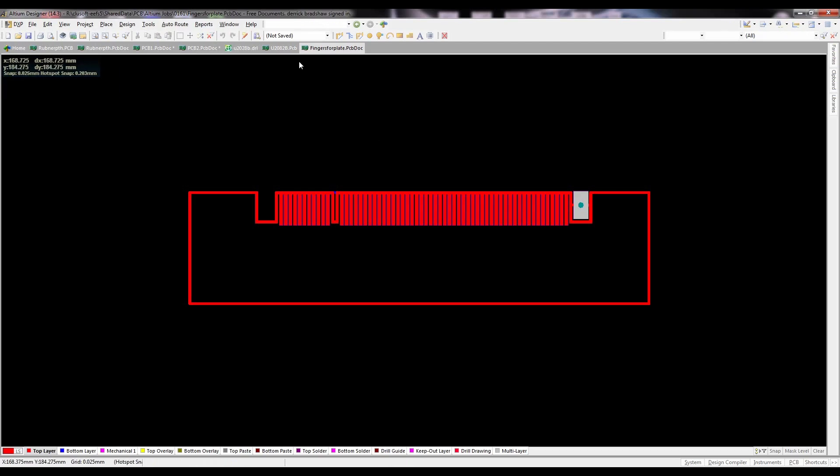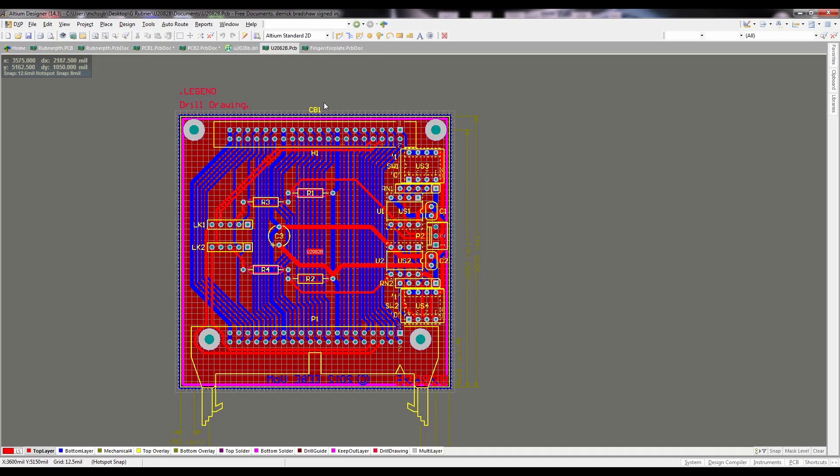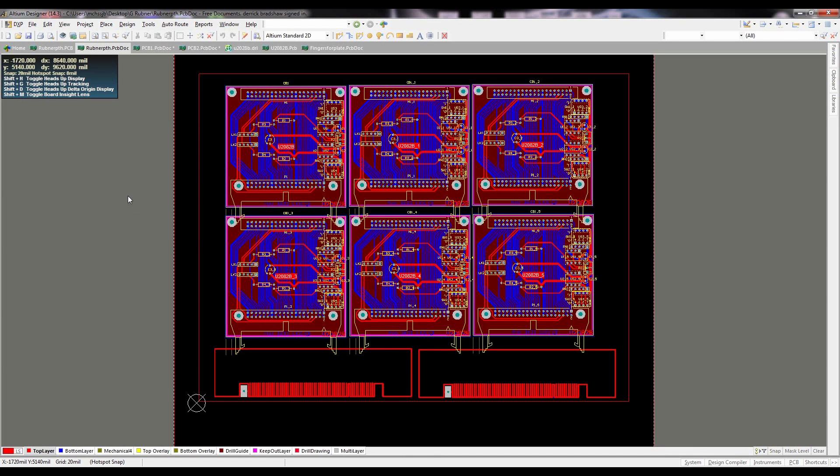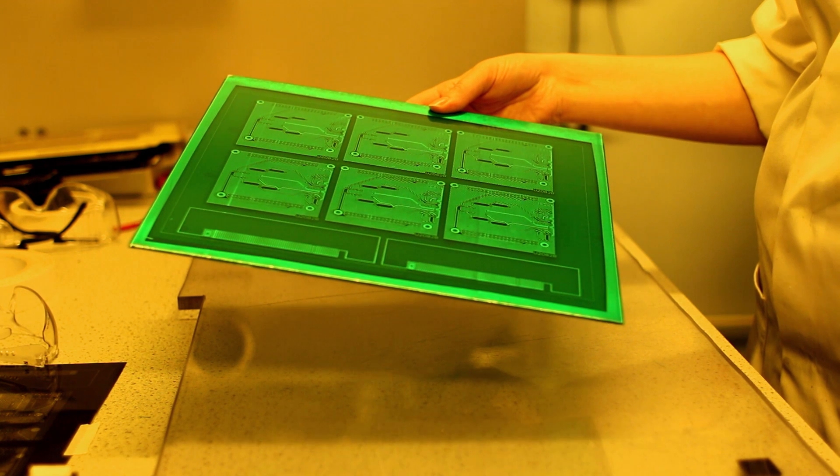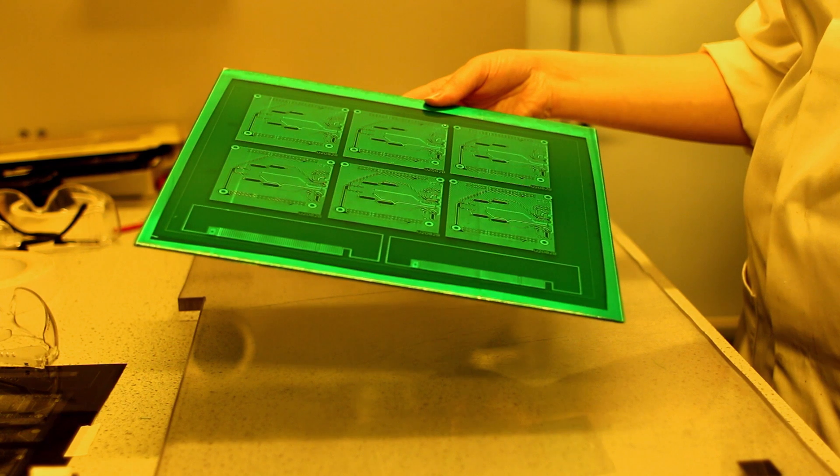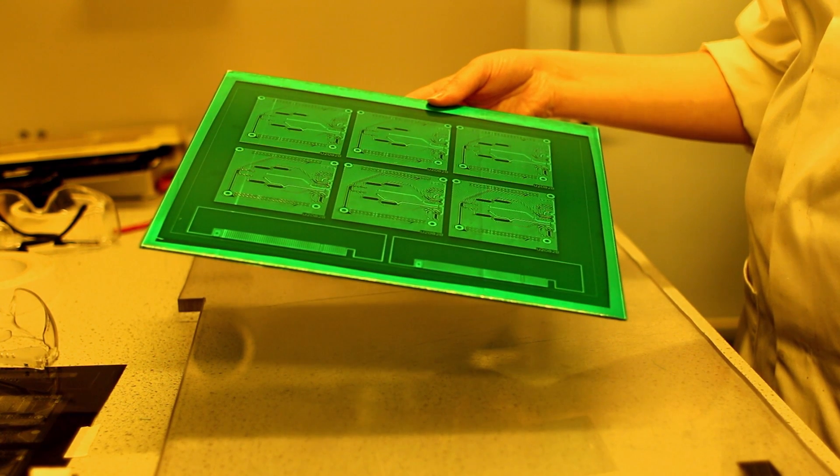The process requires you to create designs using an Altium template which are then transposed into Gerber files. For efficiency, multiple designs are combined onto a single production panel which when completed is split into individual boards. It's more cost effective to process boards in this way, but it might mean you have to wait for the panel to fill up before the process is started.